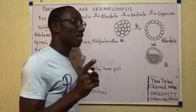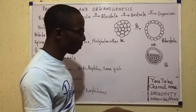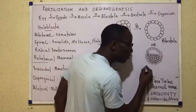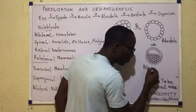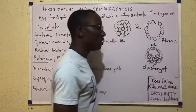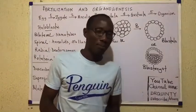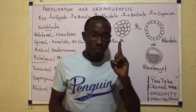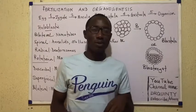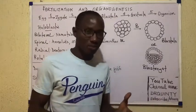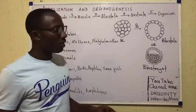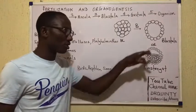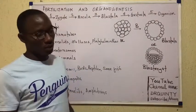But in mammals — not just humans, it's a general thing for mammals — the blastula is called a blastocyst. The difference between blastula and blastocyst: blastula is the general term, but the blastula in mammals is called blastocyst. Moreover, the blastocyst in mammals does not have exactly the same appearance and features as the blastula in organisms generally.